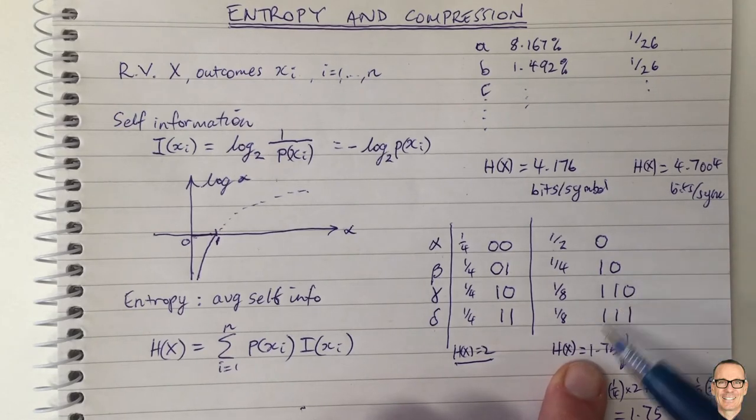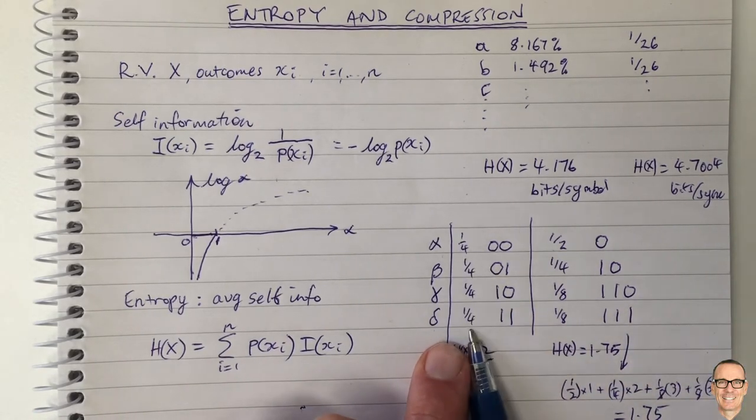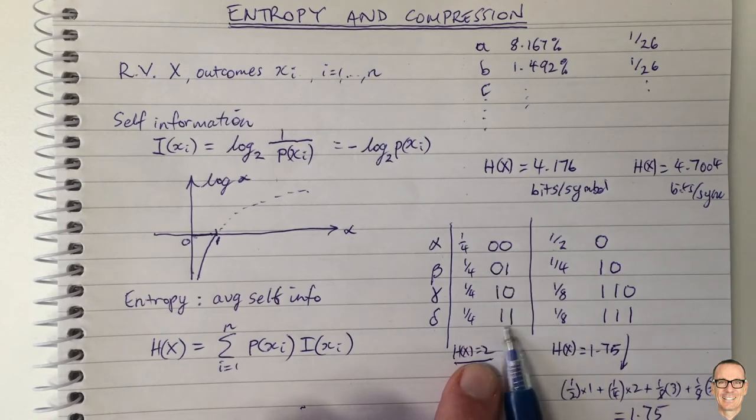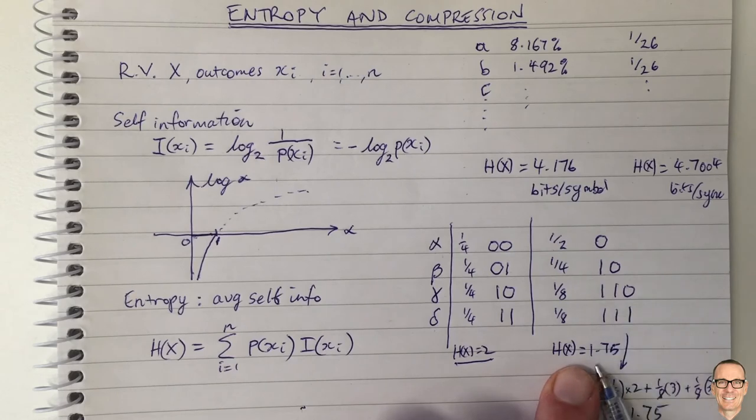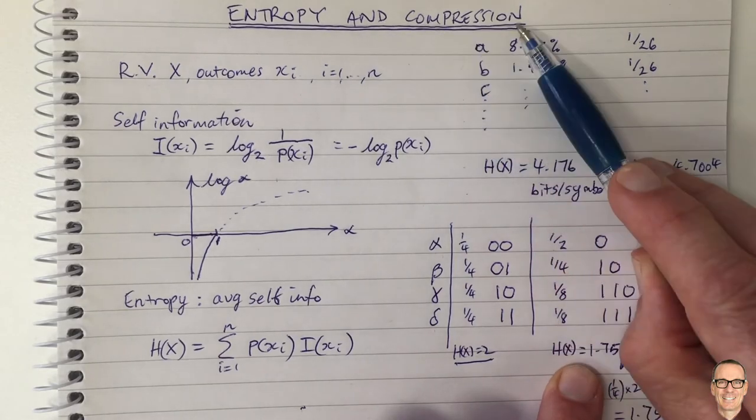And this is compression. Because if they happened equally likely, I would need two bits. But if they happen non-equally likely, then I can develop a code which compresses and on average, I only need 1.75 bits. And this is compression.